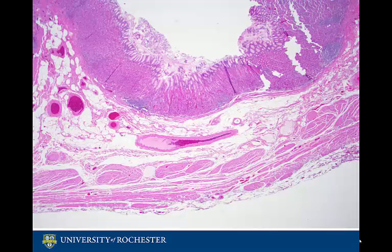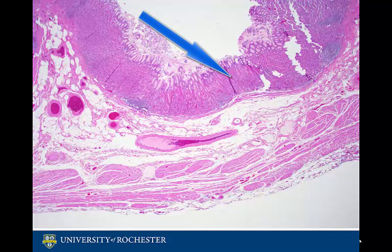The wall of the stomach is made up of four distinct layers, which serve different purposes and are made up of different cell types. Bordering the lumen is the mucosa, the layer we will focus on.